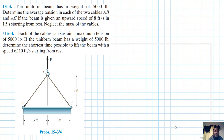In the second problem, each of the cables can sustain a maximum tension of 5,000 pounds. If the uniform beam has a weight of 5,000 pounds, determine the shortest time possible to lift the beam with a speed of 10 feet per second starting from rest. Both problems come from Engineering Mechanics: Dynamics, 13th edition by Hibbeler.